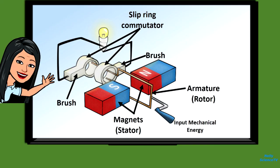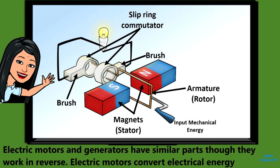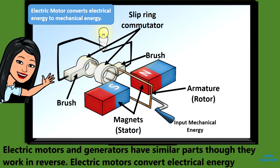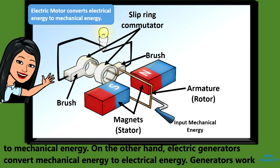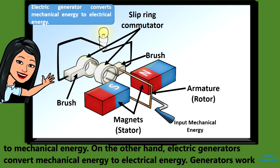Now let's discuss the working principle of electric generators. What are the basic parts of electric generators? Electric motors and generators have similar parts, though they work in reverse. Electric motors convert electrical energy to mechanical energy. On the other hand, electric generators convert mechanical energy to electrical energy.